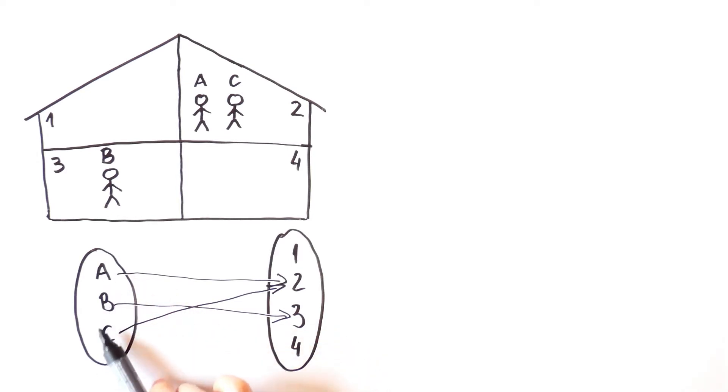Note that for every person there is exactly one room. But not in every room is one person. For instance, rooms 1 and 4 are empty, while in room 2 are two people.